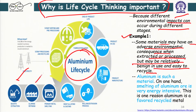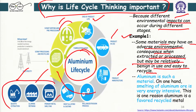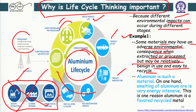From bauxite extraction through alumina refinery, primary metal smelting, ingots, rolling, extrusion, product manufacture, product in use, end of product life, scrap sorting and scrap processing — as you eliminate these stages through recycling you eliminate a lot of associated environmental impacts. Only 5 percent of the energy needed in primary production is consumed when you recycle aluminum. That is the reason why aluminum is a highly recyclable product.